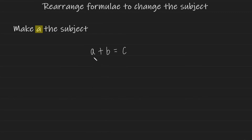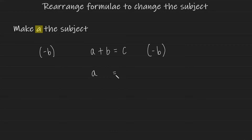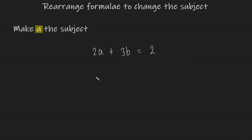It's just the plus b. So if I can eliminate this plus b using my knowledge of solving equations, I can successfully rearrange and make a the subject. Since it's a plus b, I perform the opposite operation — minus b on both sides. The a plus b and the minus b cancel out, leaving just a. On the other side, c minus b is introduced, and there you have it — a is now the subject.